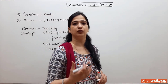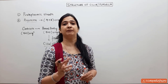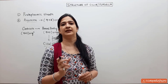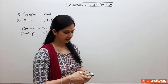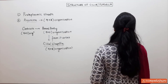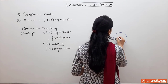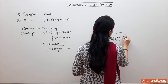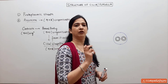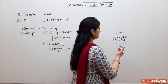In the 9 plus 2 organization, at the periphery there are 9 doublets, and at the center there are 2 singlet fibrils. These 2 central singlet fibrils are marked as C1 and C2, and every fibril is made up of 13 protofilaments.